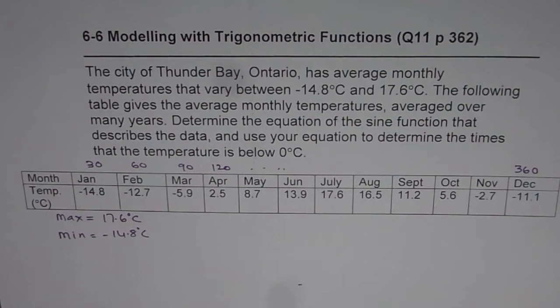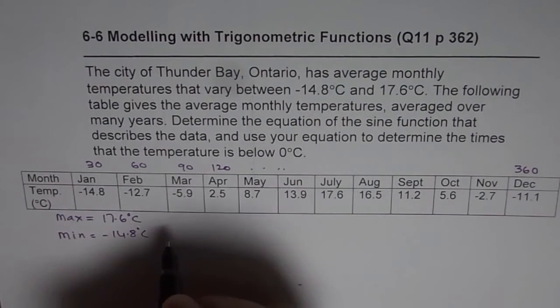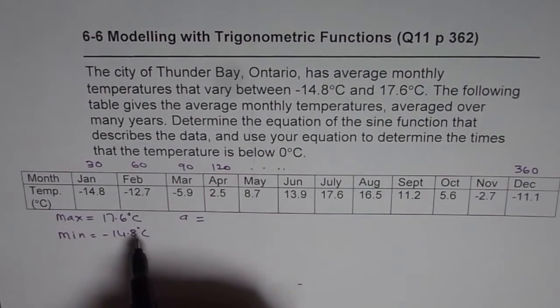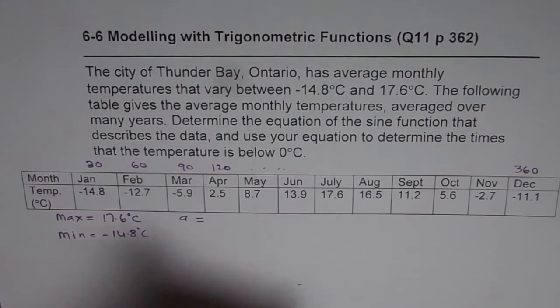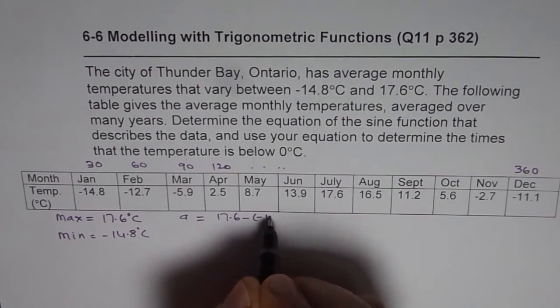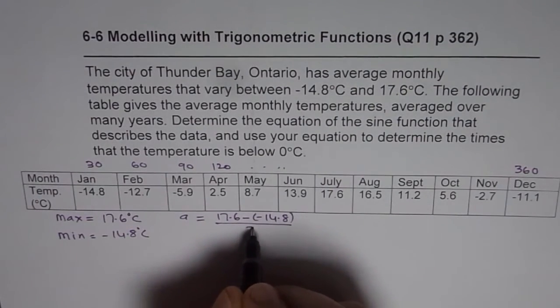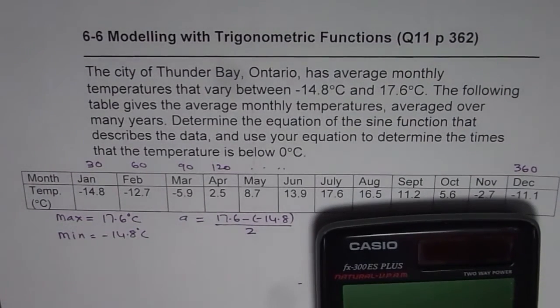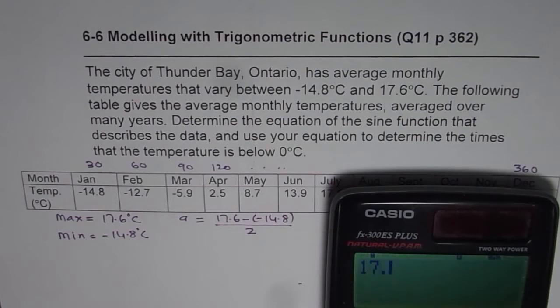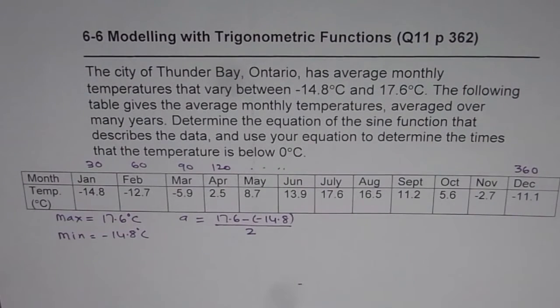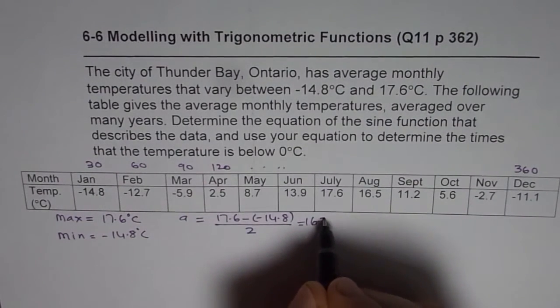So amplitude is equals to difference of these 2 divided by 2. So which is 17.6 minus minus 14.8 divided by 2. So use your calculator in solving such questions. 17.6 plus 14.8 divided by 2 equals to, and in decimals, 16.2 is the amplitude.